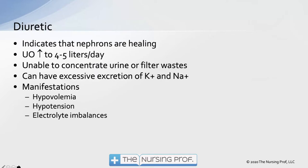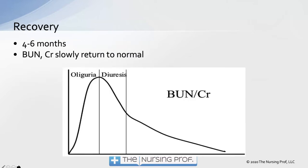Within a few days, the patient moves into the diuretic phase. The nephrons start healing — a good sign — but urine output increases to 4 to 5 liters a day as the glomerulus opens up and dumps fluid through. Some waste products are excreted with all that urine, but we may still need dialysis. Potassium, which was high in the oliguric phase, could now drop low due to all this fluid dumping.